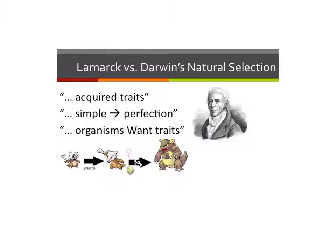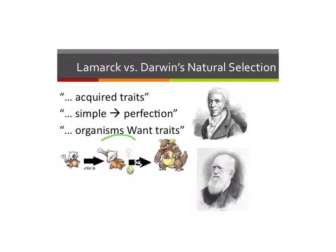Lamarck also stated that organisms wanted to develop new traits, while Darwin stated that the environment is really what selects which traits can survive and which traits are selected against.